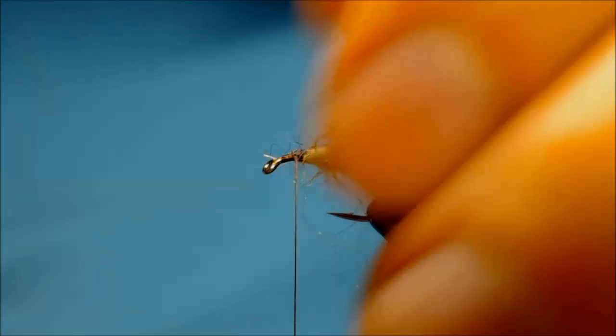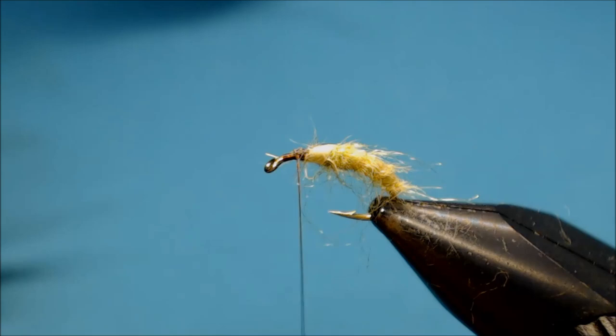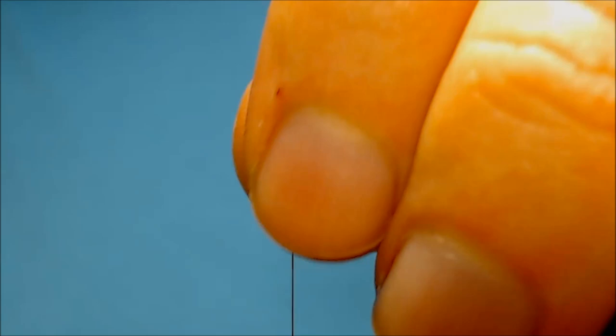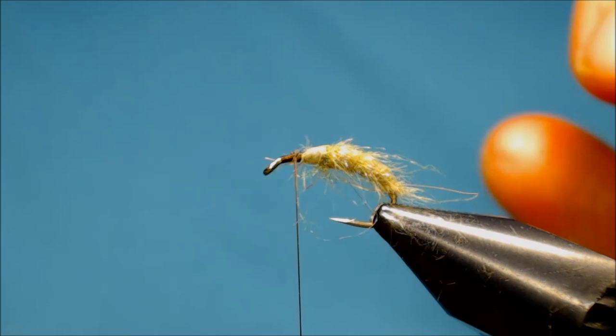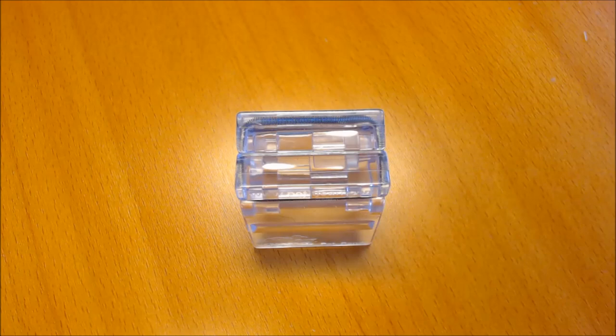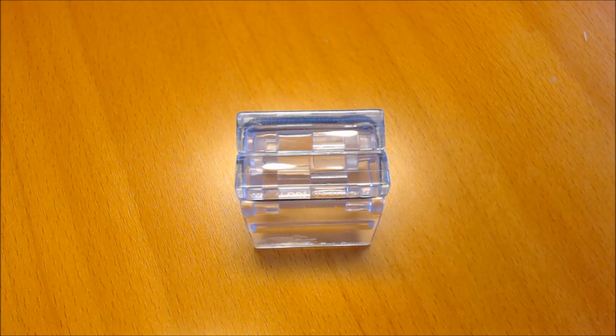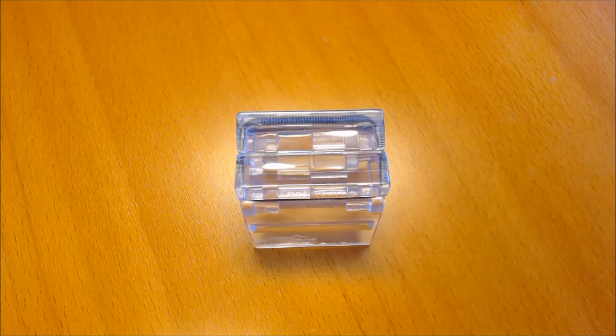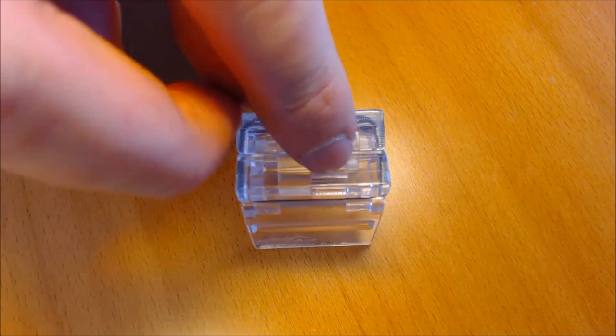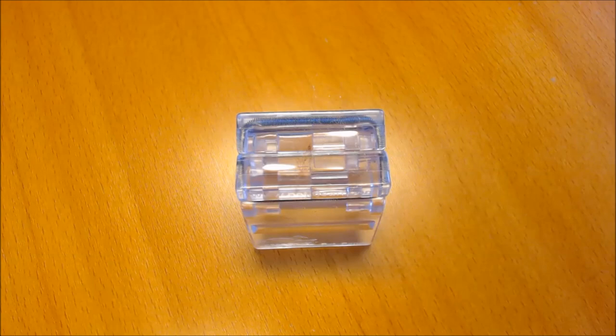And now for the front part of the fly, I'll do a dubbing mix using the magic tool. And in this I will blend some dubbing, some antron, and some CDC. And the first one is a brown green with some green with some UV fibers or UV strands in it.